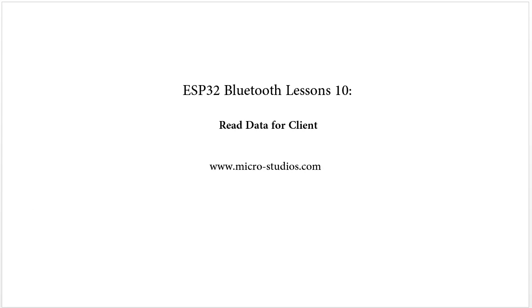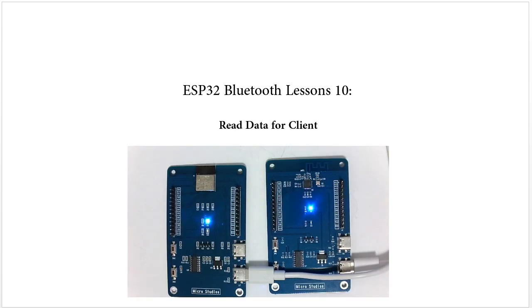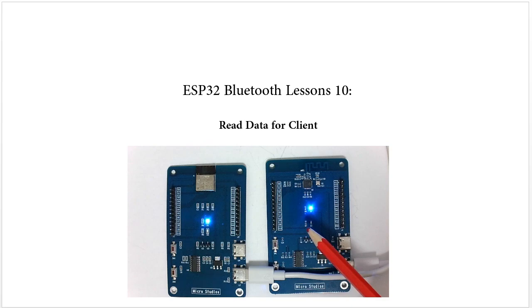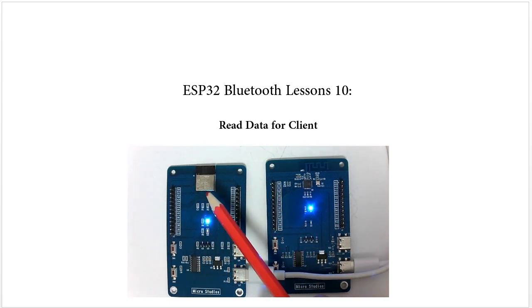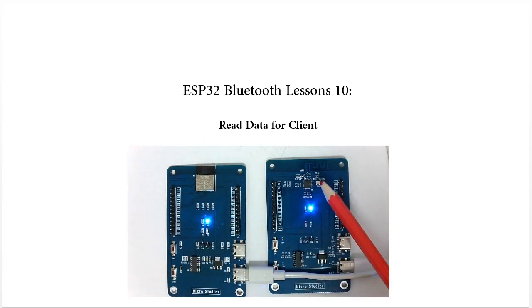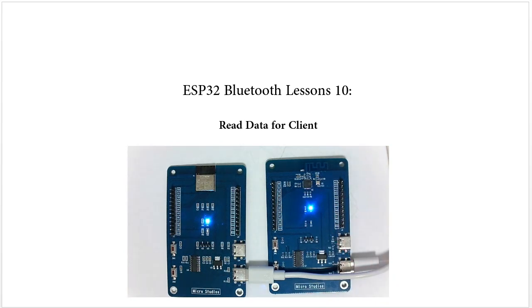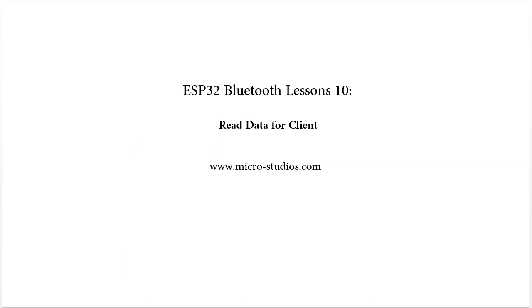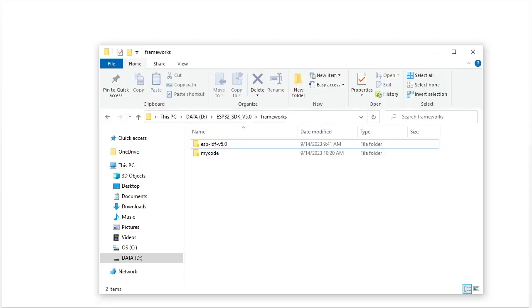For the client we need two boards. We have one board for the server and another one for the client. Both are built on the ESP32-C3 — one uses a module and another uses a separate chip. This is hardware 13.